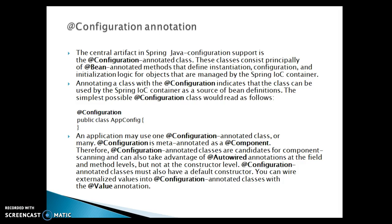Annotating a class with @Configuration indicates that the class can be used by the Spring IoC container as a source of bean definitions. The simplest possible @Configuration class would read as follows: you can create a class and annotate it with @Configuration — that means this is your configuration class. Within this configuration class you can create many methods, and those methods you can annotate with @Bean. Every method will be responsible to return a single Spring bean, which will be registered into the Spring IoC container.